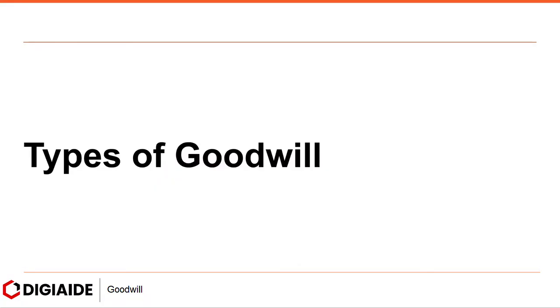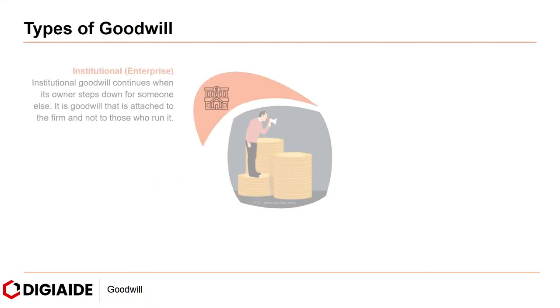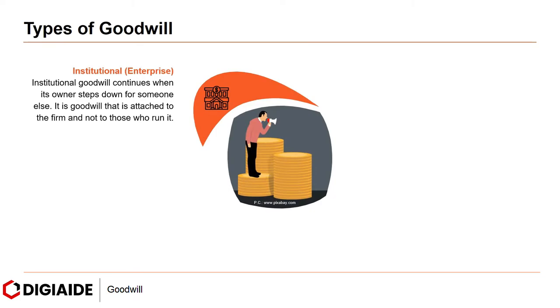Moving on to the types of goodwill. First, institutional or enterprise goodwill. Institutional goodwill continues when its owner steps down for someone else. It is goodwill that is attached to the firm and not to those who run it.